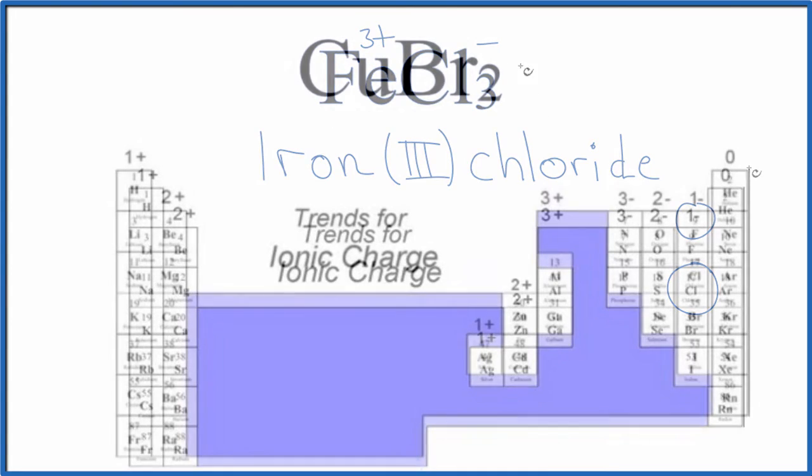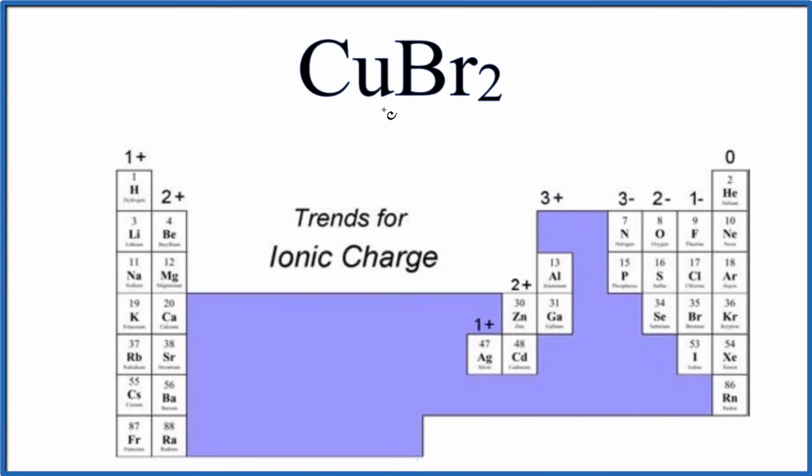Now you try one. Pause and write the name for CuBr2. Copper is a transition metal, it's right here on the periodic table. So we write copper and bromine. Change the I-N-E to I-D-E. And bromine right here, one minus. We have two of them, so that's two minus. Copper has to be two plus. Copper two bromide.